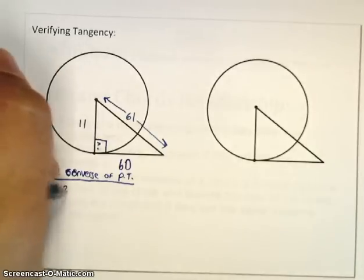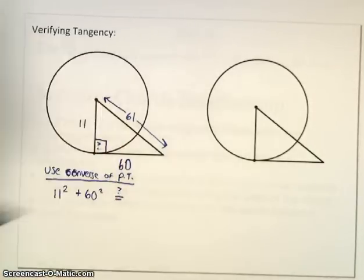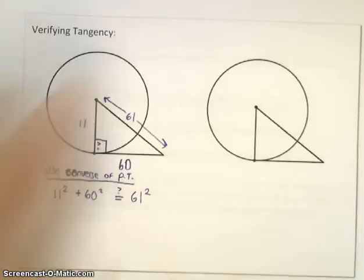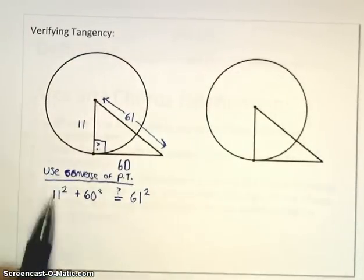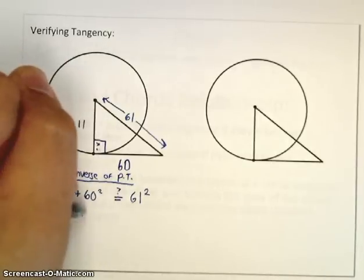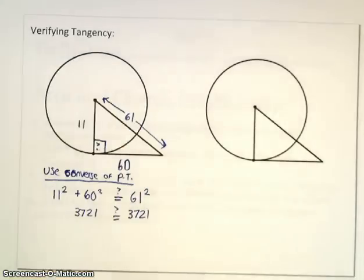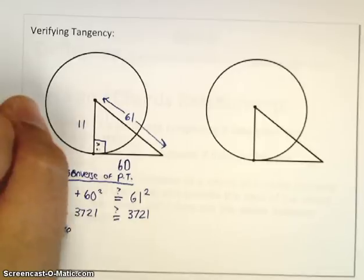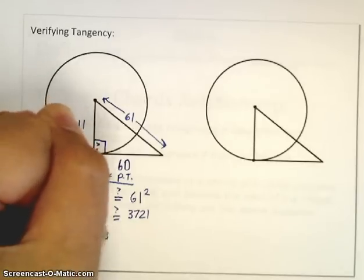So I take my two legs, 11 squared and 60 squared, and we don't know if it's equal, so I'll put a little question mark above it, is possibly equal to 61 squared. Well 11 squared and 60 squared, when I evaluate that, I get 3721. When I evaluate 61 squared, I also get 3721. So I have proved equality here, so yes, this is a right triangle, which means, in conclusion, yes, this line is tangent.